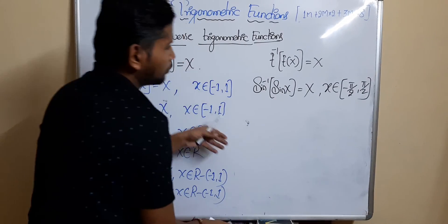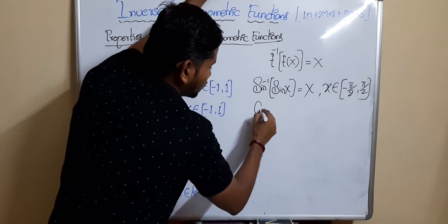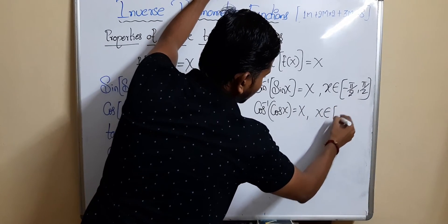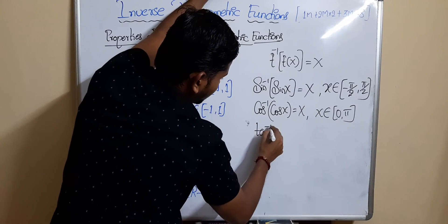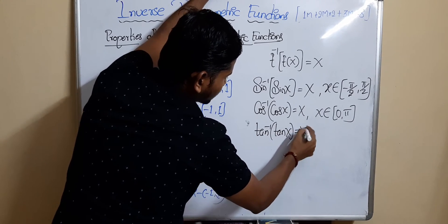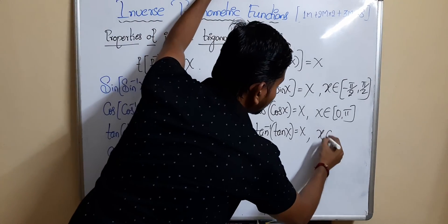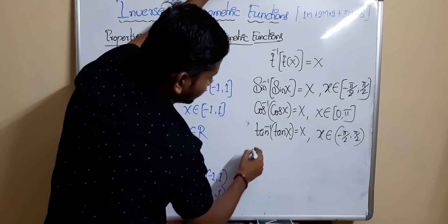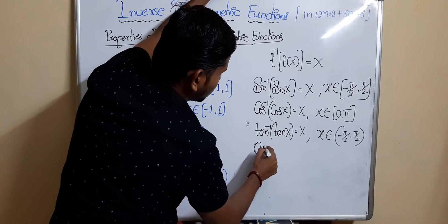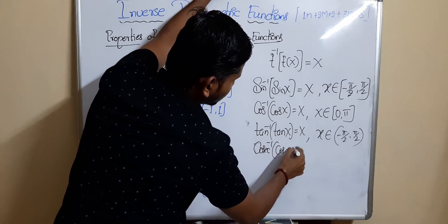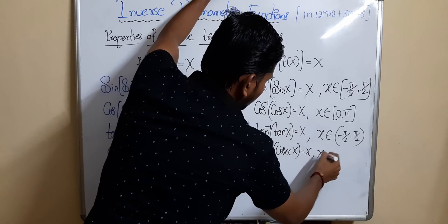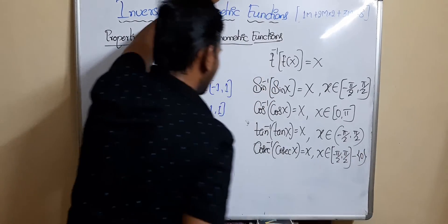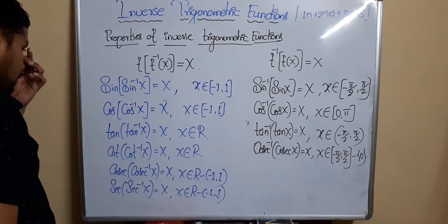For the remaining functions: cos⁻¹(cos(x)) = x, where x belongs to [0, π]. tan⁻¹(tan(x)) = x, where x belongs to the open interval (-π/2, +π/2). cosec⁻¹(cosec(x)) = x, where x belongs to [-π/2, +π/2] excluding 0.